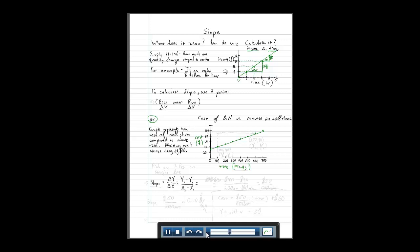So at 100 minutes, your total bill is $40. So we have this point, 100, 40.